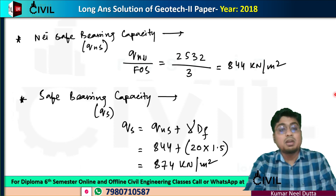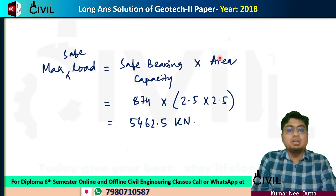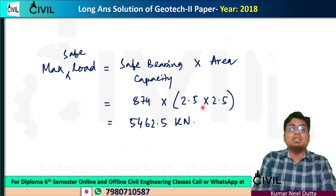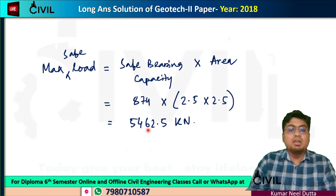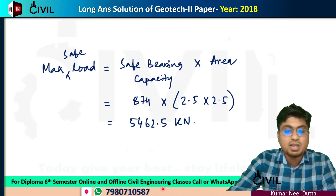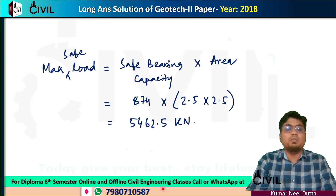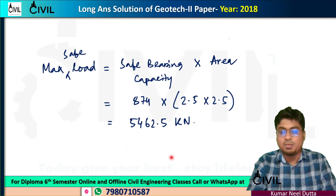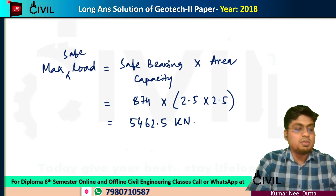The maximum safe load equals safe bearing capacity multiplied by the area. The maximum safe load is 5462.5 kN. This is the answer to this problem, so if you have 5 marks on this problem, you can get full marks. It is a basic problem and you can follow the solution in the video.